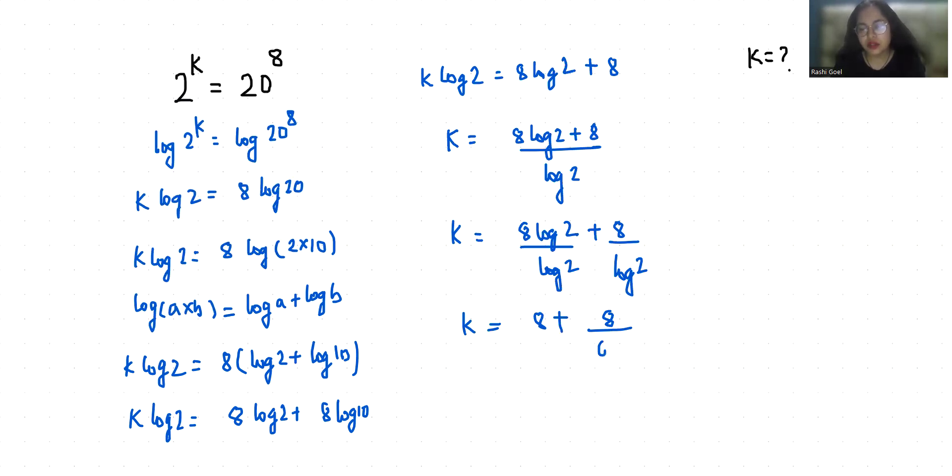k equals 8 plus this gives us 26.57. So the value of k is 34.57.